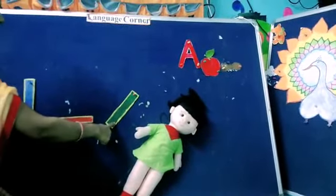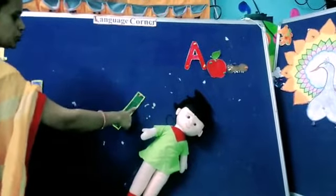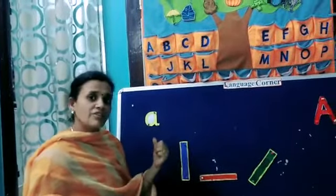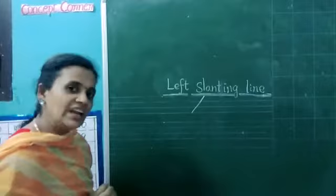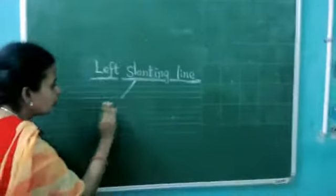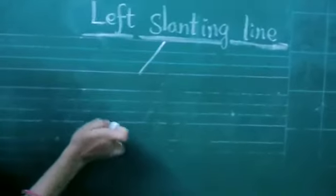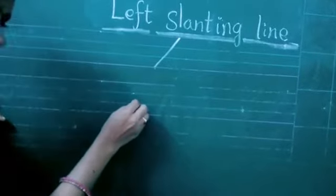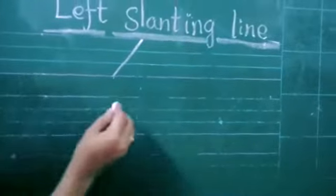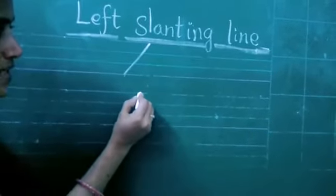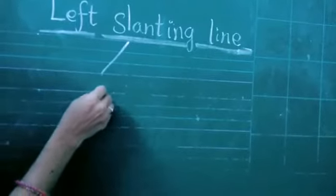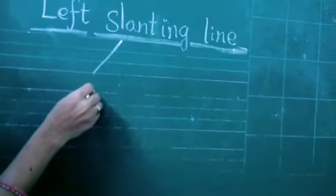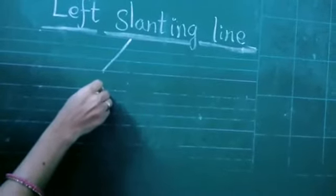Say once again: from right to left. Shall we move on to the written part — how to do the left slanting line? Let's move on. See in your four-line note — each line has four lines: a red line, a blue line, a third blue line, and a fourth red line. You have to do the left slanting line. Keep your pencil on the red line and move from right to left to the left side.